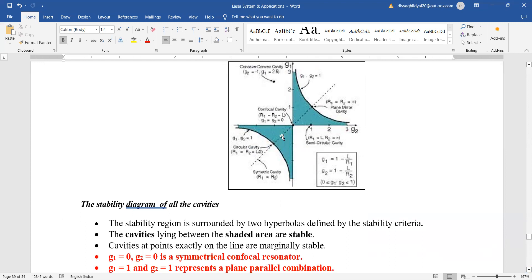The cavity lying between the shaded areas are stable and cavities at points exactly on the line are marginally stable. g1 equal to 0 and g2 equal to 0 is a symmetrical confocal resonator as you can see here in the diagram.